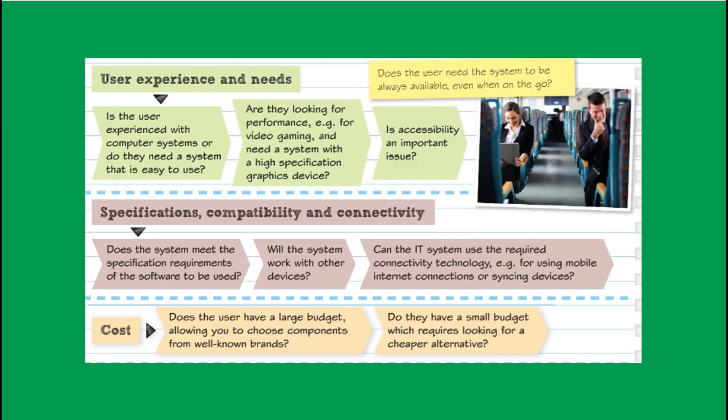Another factor you can talk about is cost. This can be more important for businesses or students. Questions will usually give you information about the user so you can figure out whether they have a lot of disposable income. Cost is a factor you can pretty much always talk about — if asked about factors when choosing IT systems, you should always think about cost and privacy.